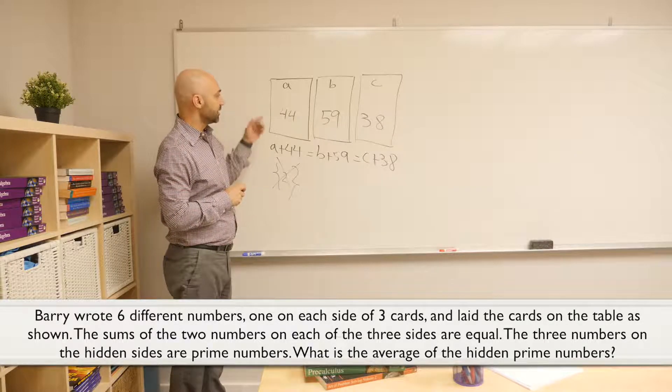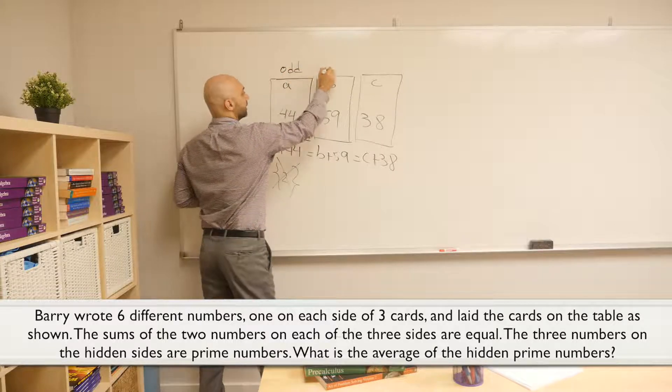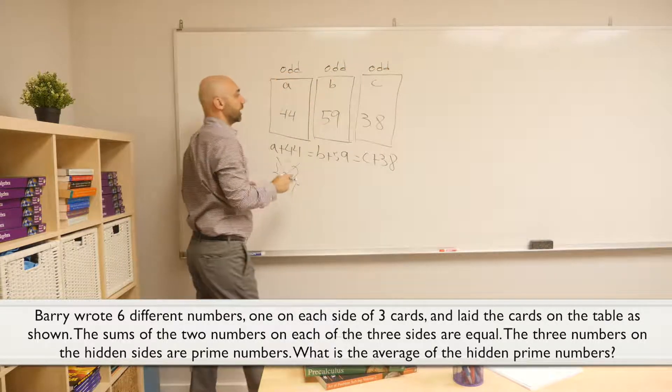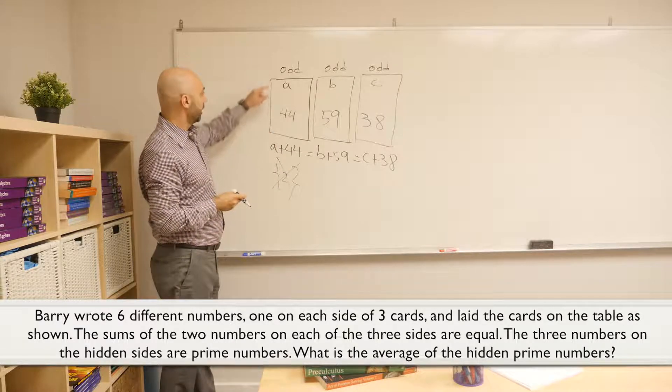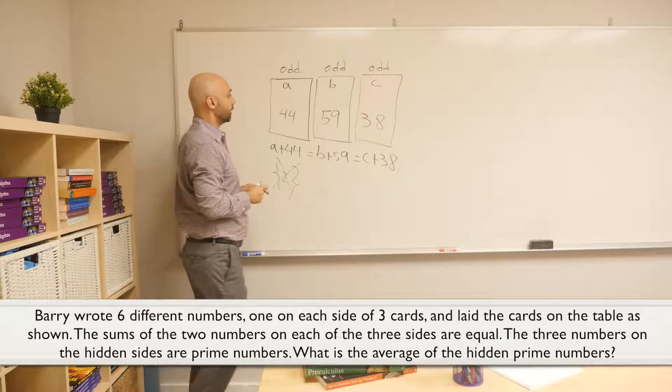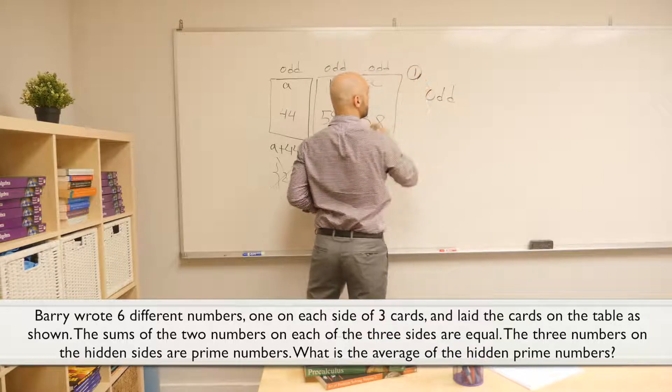Then the numbers in the back are going to be odd. Let's see what we get as the sum of the numbers in the back and in the front. So an odd number plus 44, which is an even number, adds up to another odd number.